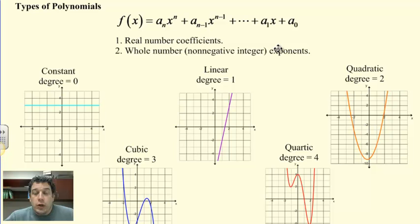If we have fraction exponents, radical exponents, imaginary coefficients, those are not polynomials, but anything else in terms of what we're dealing with are all polynomials, and these are just some of the different types.